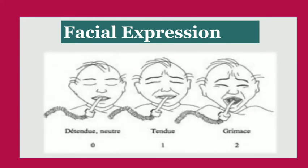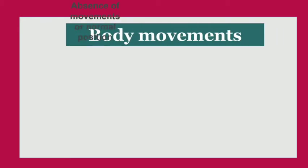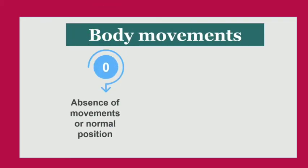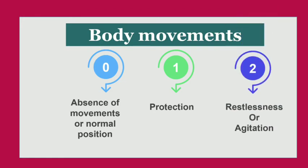Score zero is given for a neutral expression, score one for a tensed patient, and score two for grimacing patients. The second parameter is body movement. Score zero is given in case of absence of movements or normal position, score one if the patient is in a protective posture, and score two if the patient shows restlessness or agitation.